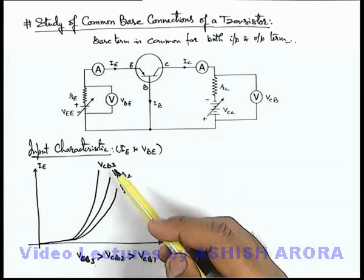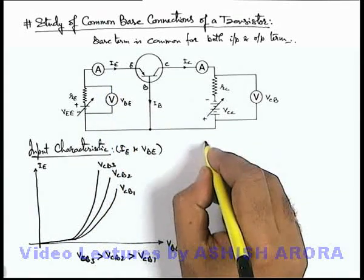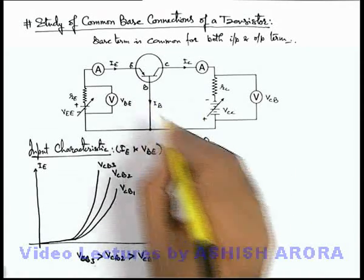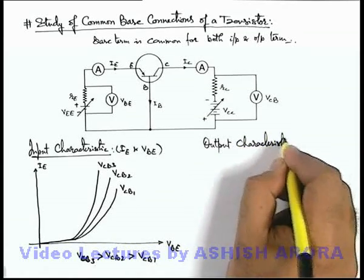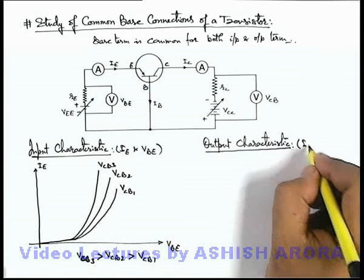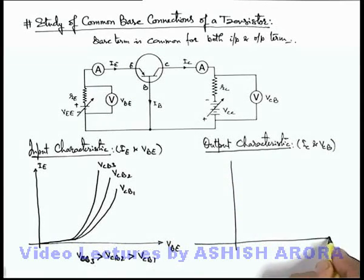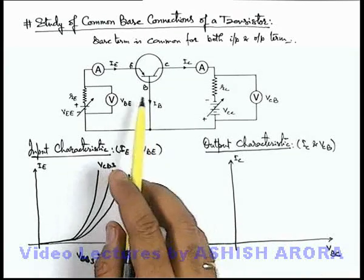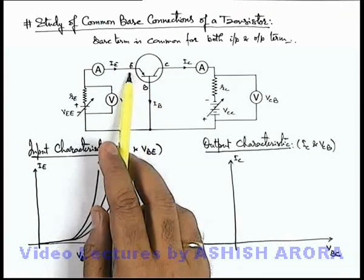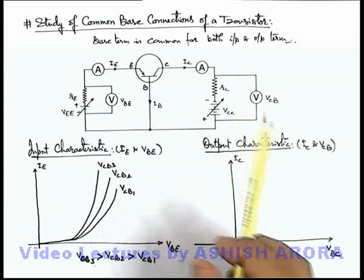Similar to this, we can also study the variation of collector current with base-collector voltage at specific values of emitter current — this is the output characteristic of the common base connection. The output characteristic is the variation between IC and VCB. In this situation it will be slightly different because here we are plotting collector current with base-collector voltage. It will not look like a reverse biased curve because collector current is constituted by the majority of emitter current, so there won't be much effect on collector current by variation of collector-base voltage.